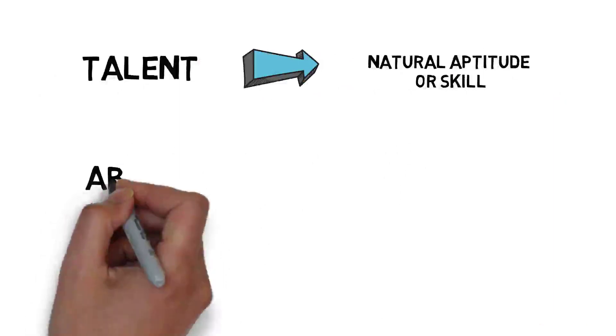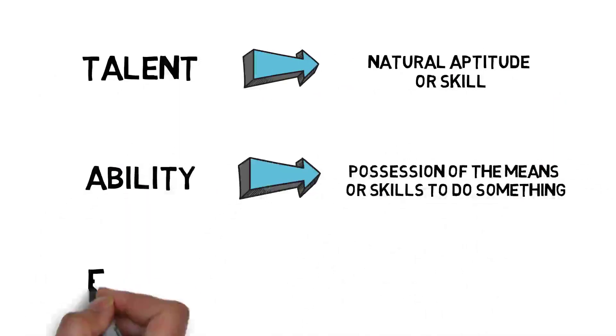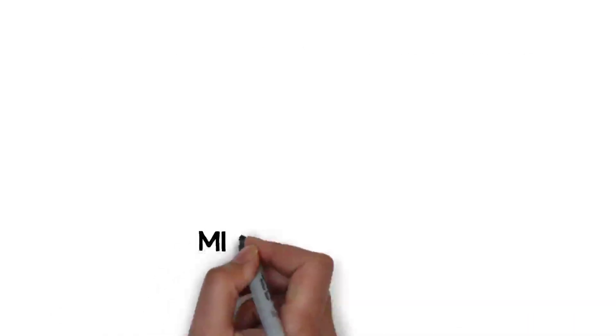Look at the definitions: Talent—natural aptitude or skill. Ability—possession of the means or skills to do something. Effort—the work needed to develop any ability.